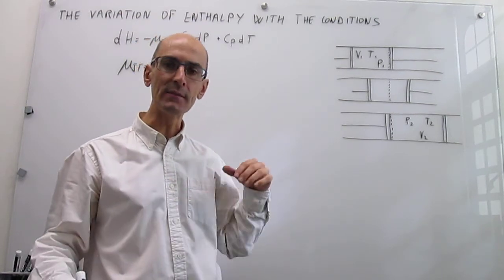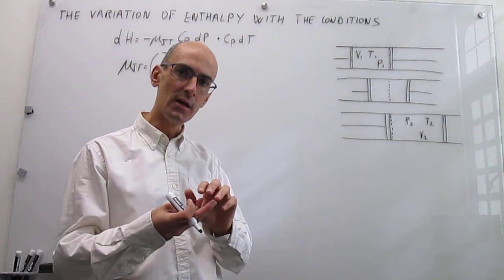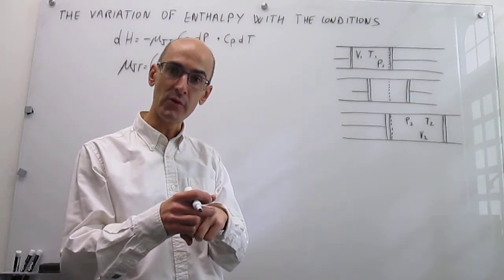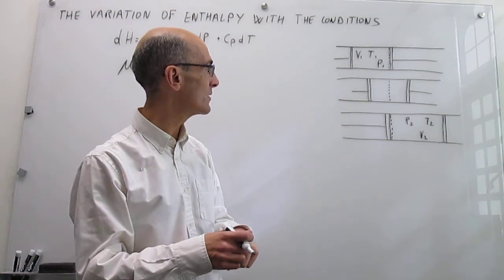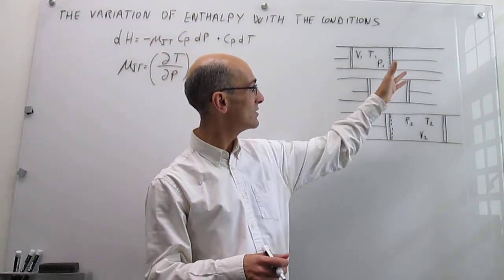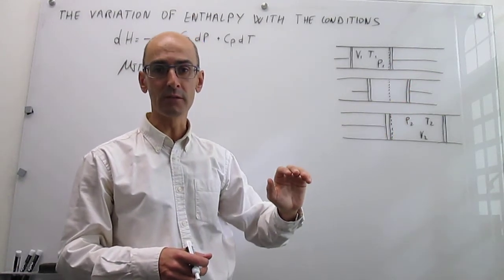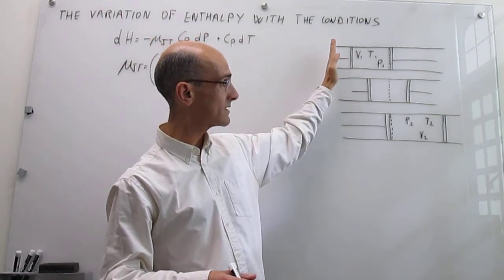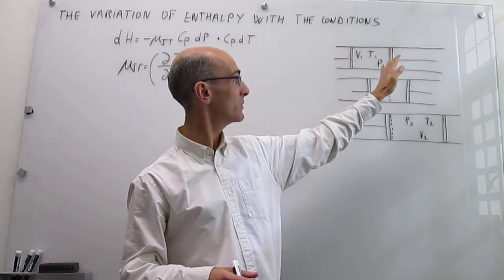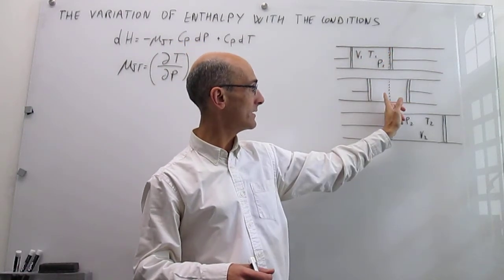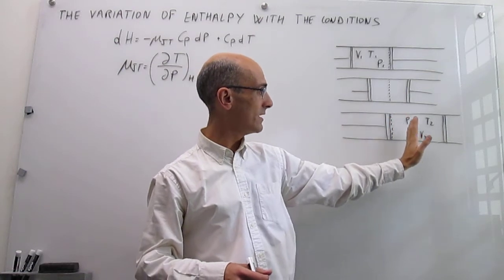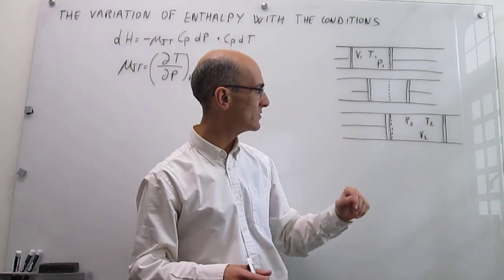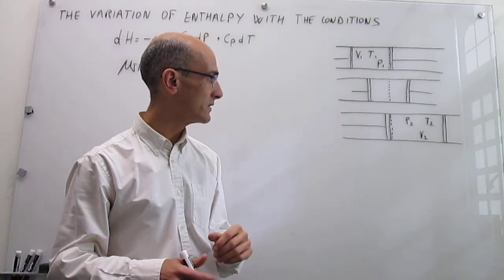The pores are quite small, meaning that gas molecules flowing through them get in contact with each other and interact. Initially there is nothing in the right compartment — the volume is zero and all the gas is in the left compartment. You then compress that gas at constant pressure P1, and eventually the gas flows through the membrane and ends up in the right compartment with a different set of conditions: P2, V2, T2.